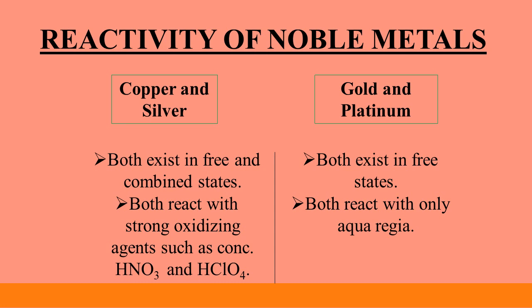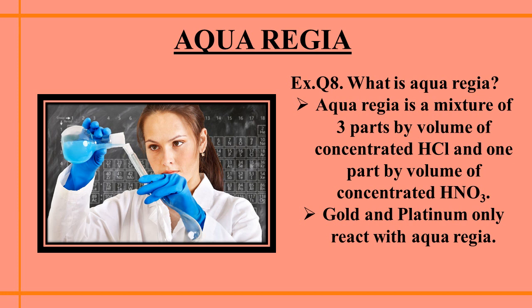Gold and platinum are very difficult to oxidize — they both exist in the free state and can only react with aqua regia. Aqua regia is a mixture of three parts by volume of concentrated HCl (hydrochloric acid) and one part by volume of concentrated HNO₃ (nitric acid). For example, to make 4 ml of aqua regia you mix 30 ml of concentrated HCl and 10 ml of concentrated HNO₃. Gold and platinum only react with aqua regia.